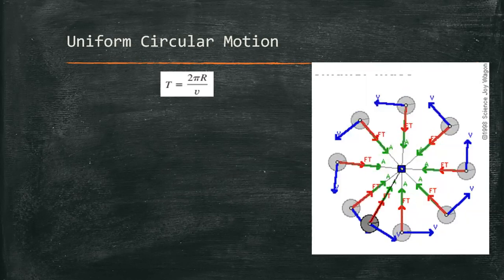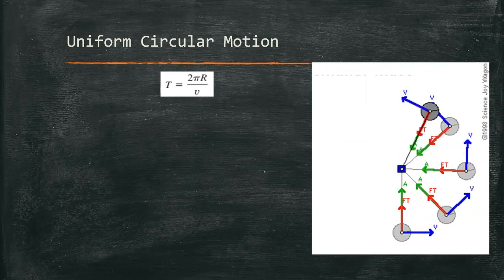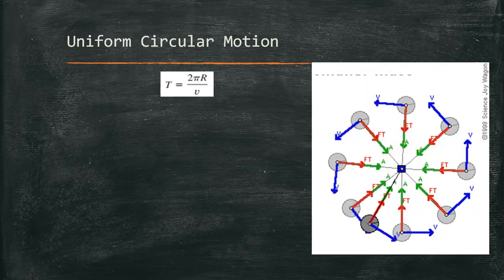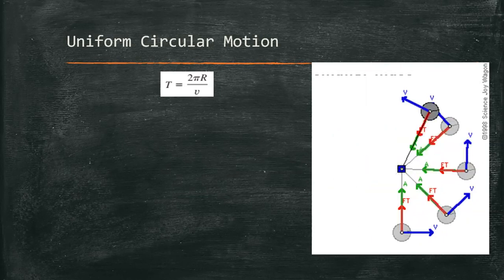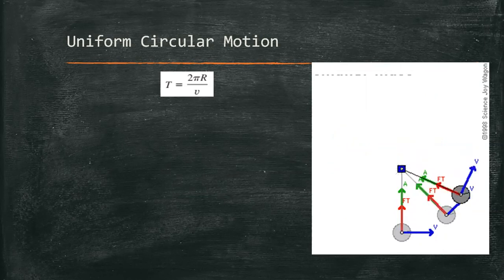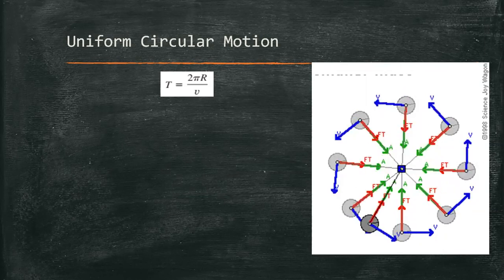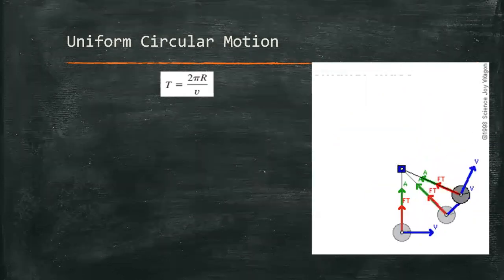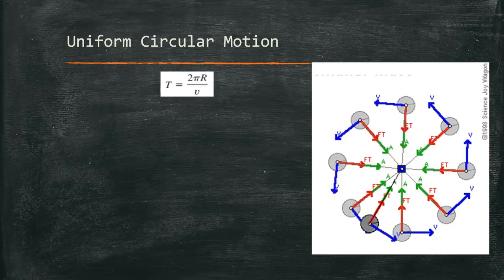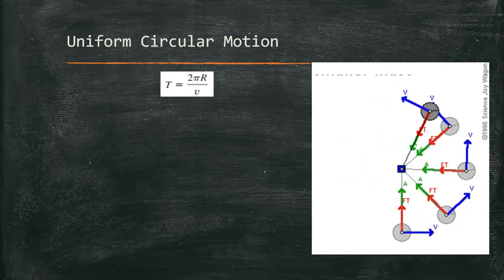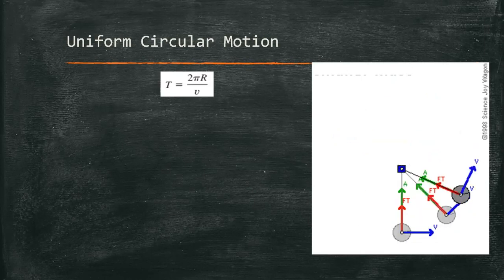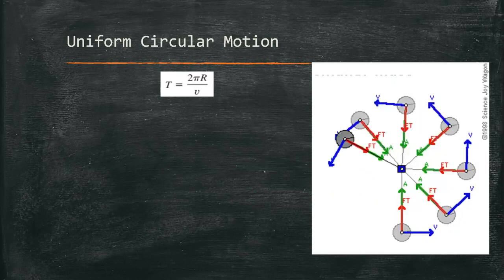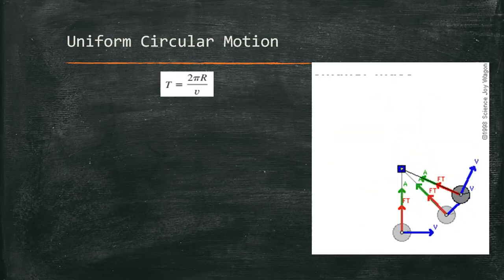In studying uniform circular motion, it's important to emphasize that the speed or the magnitude of the velocity is constant. But it is also important to note that in circular motion, the direction of the velocity is changing. Thus, it signifies that an acceleration is occurring.